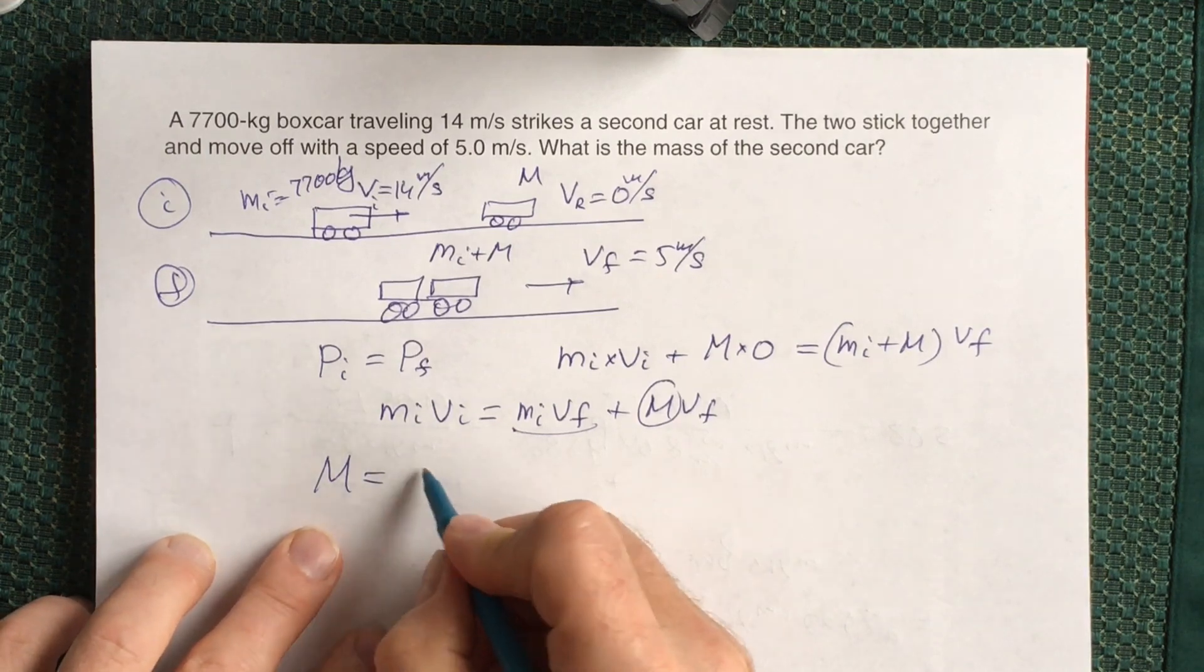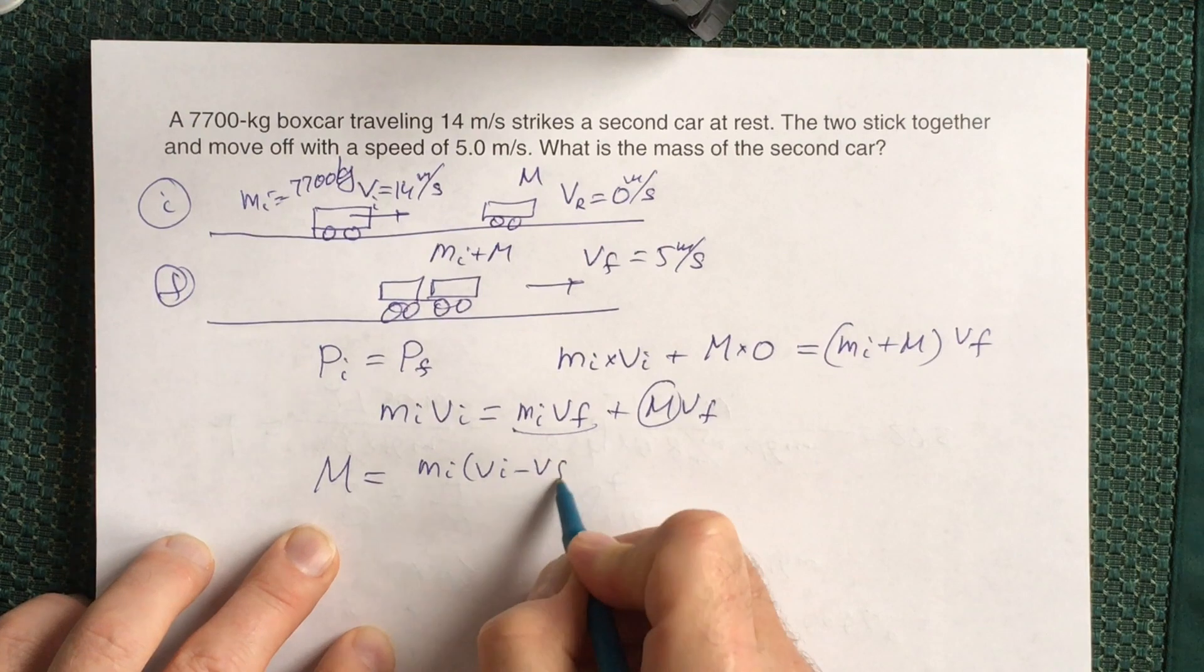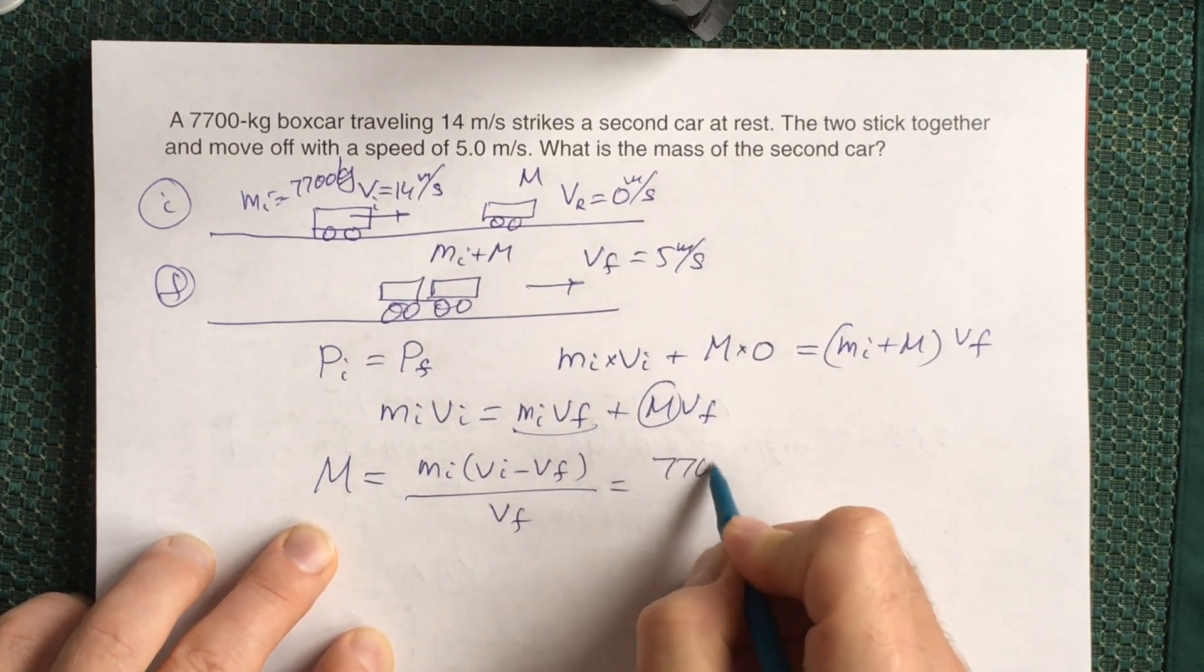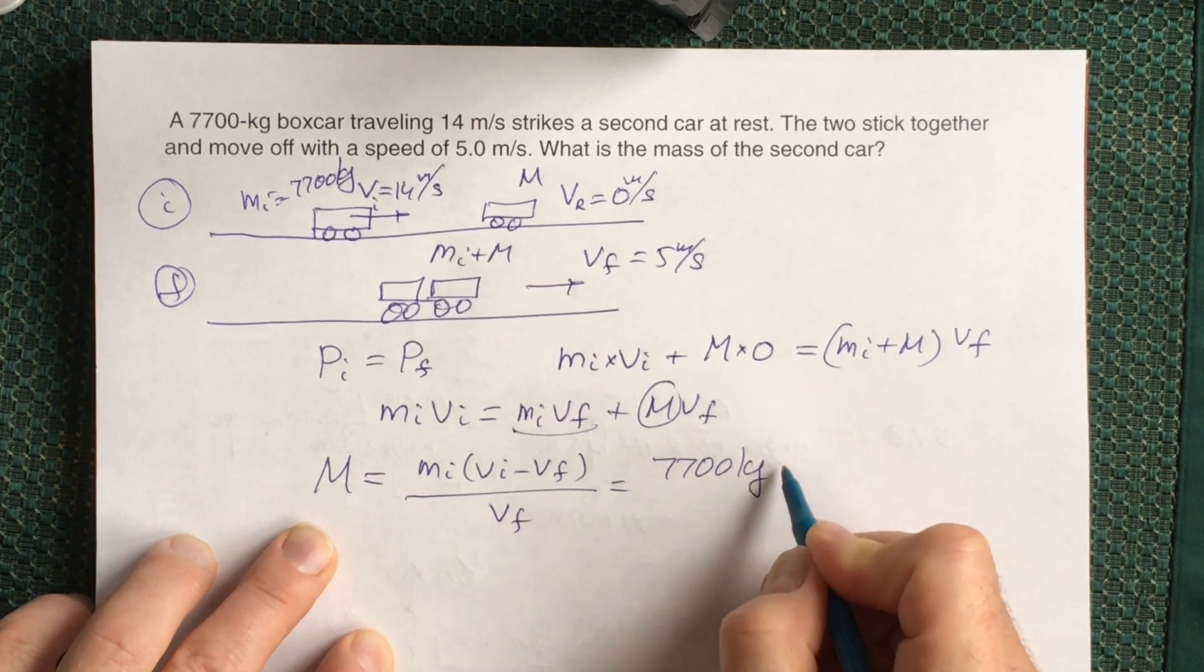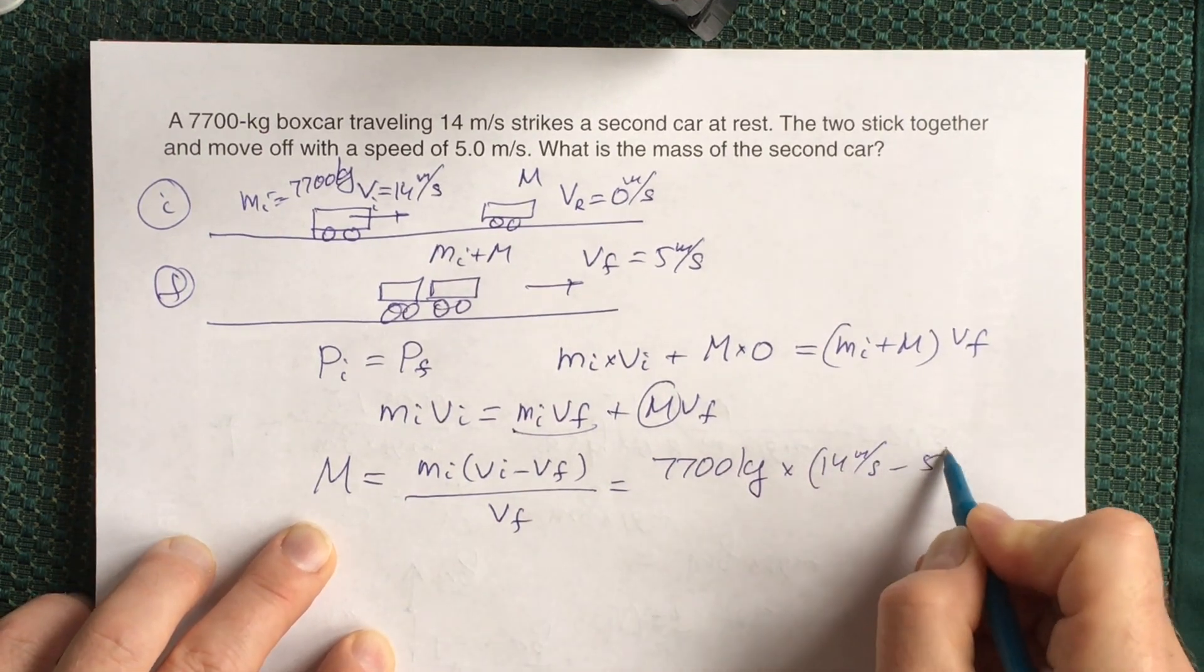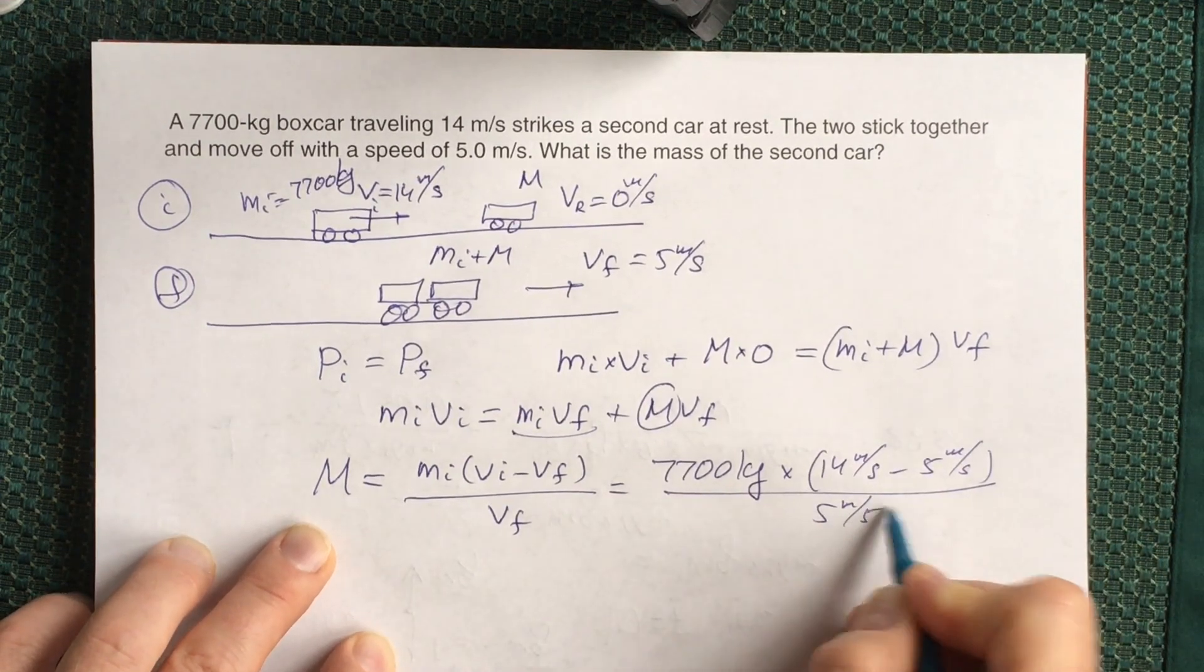So we'll have 7700 kilograms times (14 meters per second minus 5 meters per second) divided by 5 meters per second. If you do the calculations, which are elementary here, you will have...